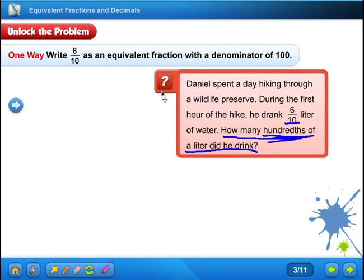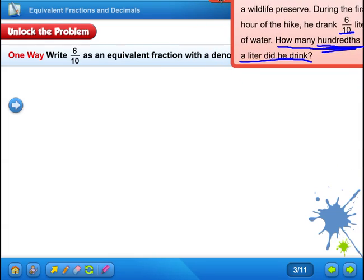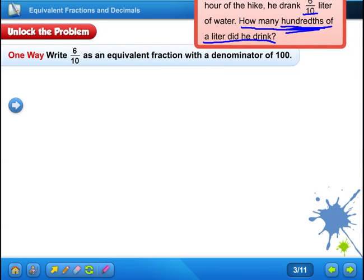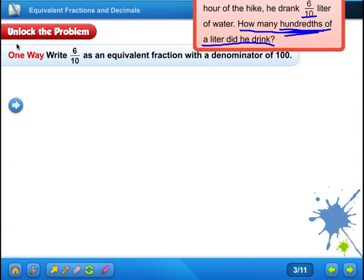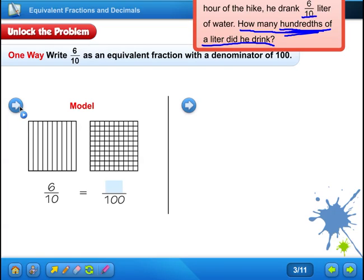Alright, so I'm going to move this up a little bit, so we can see right here what it says. One way, write six-tenths as an equivalent fraction with a denominator of 100. Right now our denominator is ten. They want the denominator to be 100. So let's see what they're telling us to do.